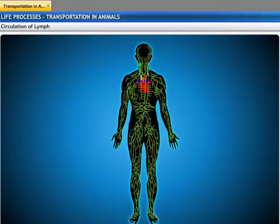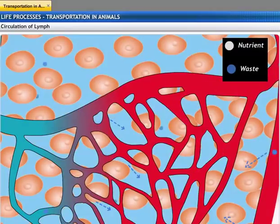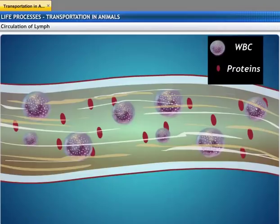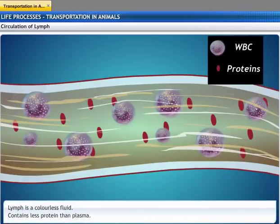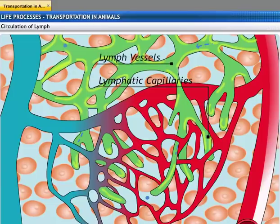The circulatory system also uses lymph or tissue fluid to transport substances through the body. Blood supplies nutrients to the tissues and collects the waste products which do not get absorbed. The waste product and any excess fluid diffuse into the intercellular spaces of the tissues and then form the tissue fluid or lymph. Lymph is similar to the plasma in blood, but it is colorless and contains less protein. Once lymph is formed, it drains into lymphatic capillaries, which join to form larger lymph vessels that finally open into larger veins, carrying the lymph back into the blood.